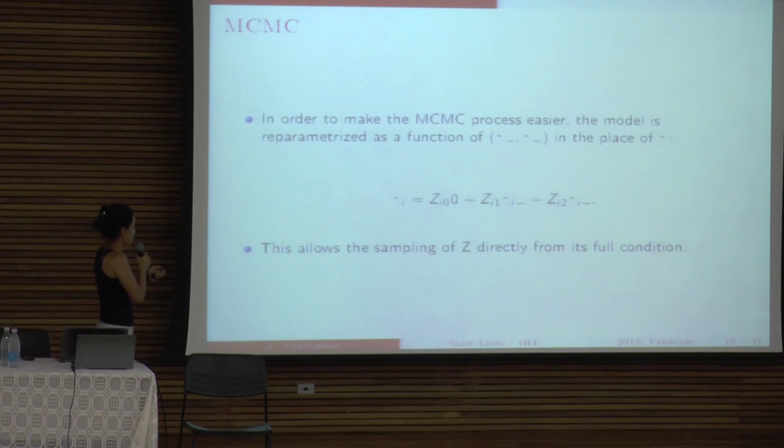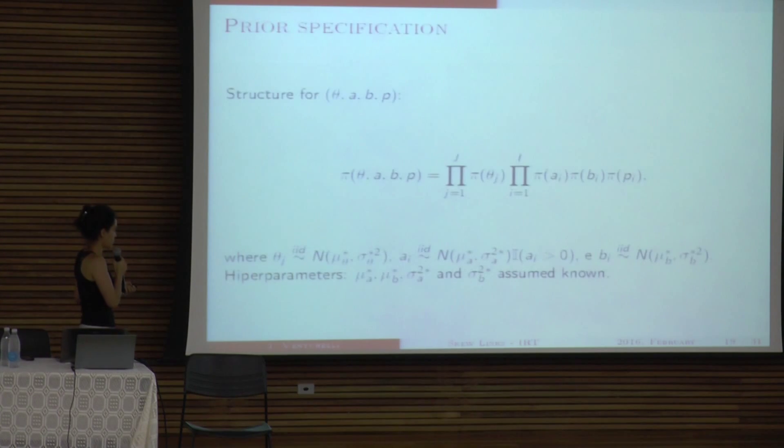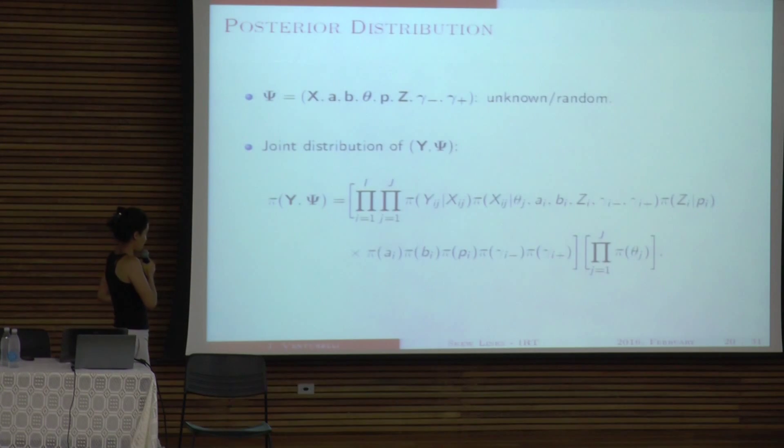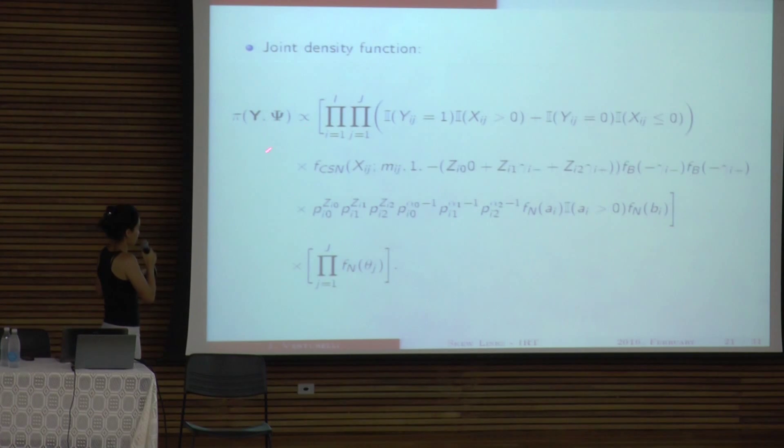So the way that this is set, I can sample Z directly from its full conditional distribution. So these are my priors. I assume that they are all independent. And this is how the posterior distribution looks like. I won't go through details. And this is the posterior when I open it. This is how the posterior looks like. So I put my mixture is here on the parameter inside the centered skew normal distribution. So it's here where we use the mixture for gamma.